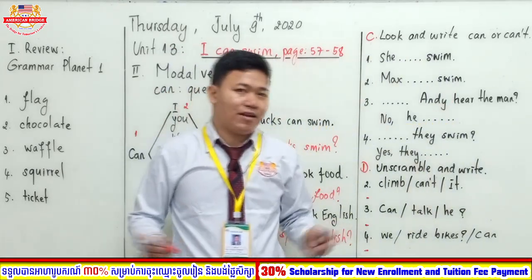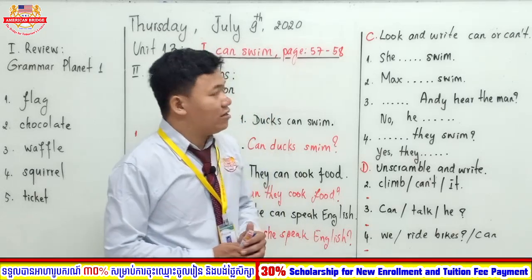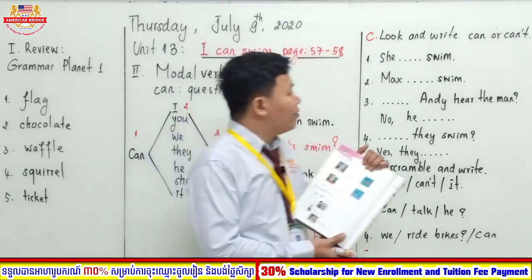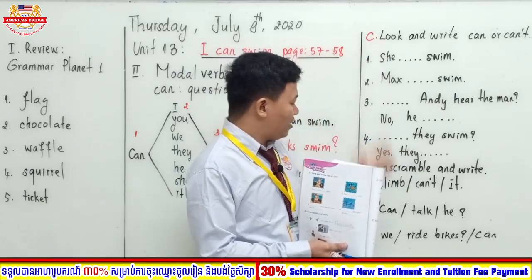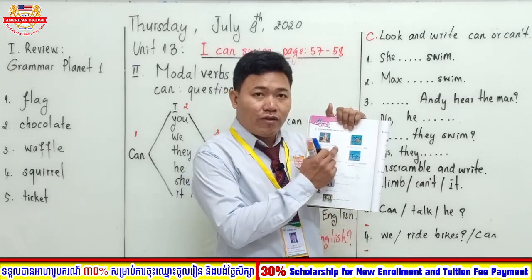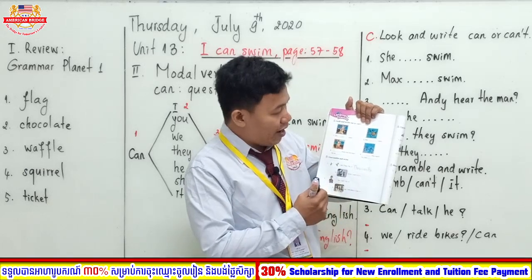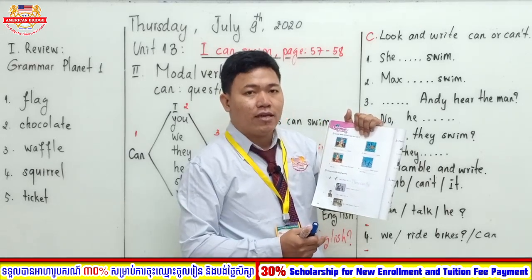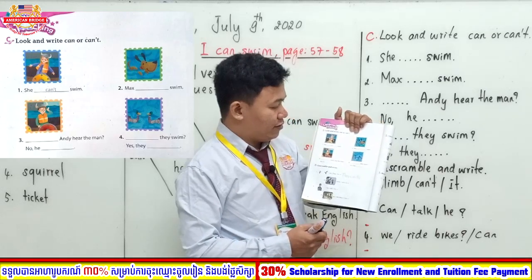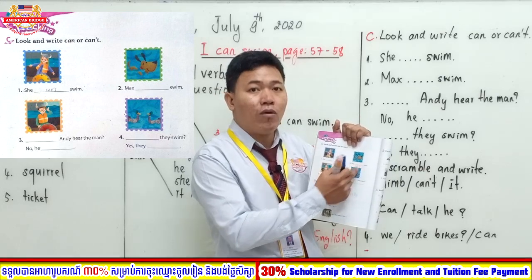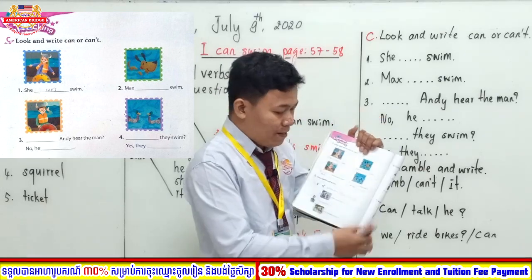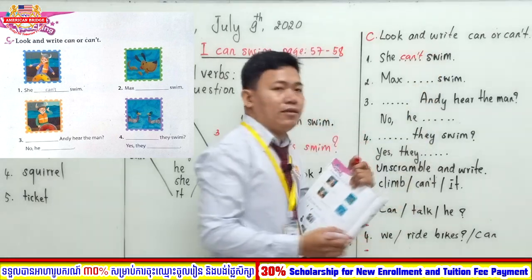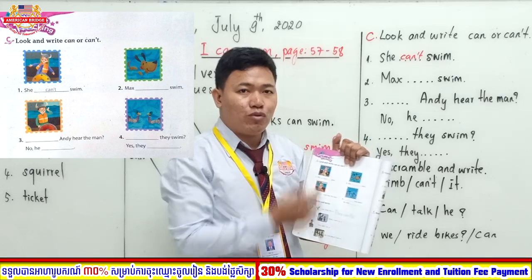Now it's time for us to do the exercise. You can turn to page 58 and you will see the exercise. We will do Exercise C and Exercise D. Read the instruction — you need to look at the pictures and try to do the exercise using 'can' or 'can't.' Take a look at the picture and fill in the blanks using 'can' or 'can't.' The first one is done for you — the answer is 'can't.' I give you five minutes to do this exercise.